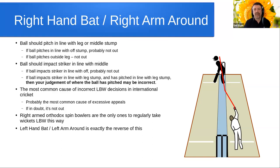Now let's go to around the wicket. In my experience, bowlers bowling around the wicket rarely take LBW wickets. With a right-hand batter facing a right-arm bowler bowling around the wicket, if I'm going to consider an LBW decision, the ball should pitch in line with leg stump or in line with middle stump. If the bowler is bowling on that angle and the ball pitches in line with off stump, that is probably not out. If the ball is pitching outside of leg, that is definitely not out, because in accordance with the laws of cricket, you may not give a batter out if the ball has pitched outside of leg stump.